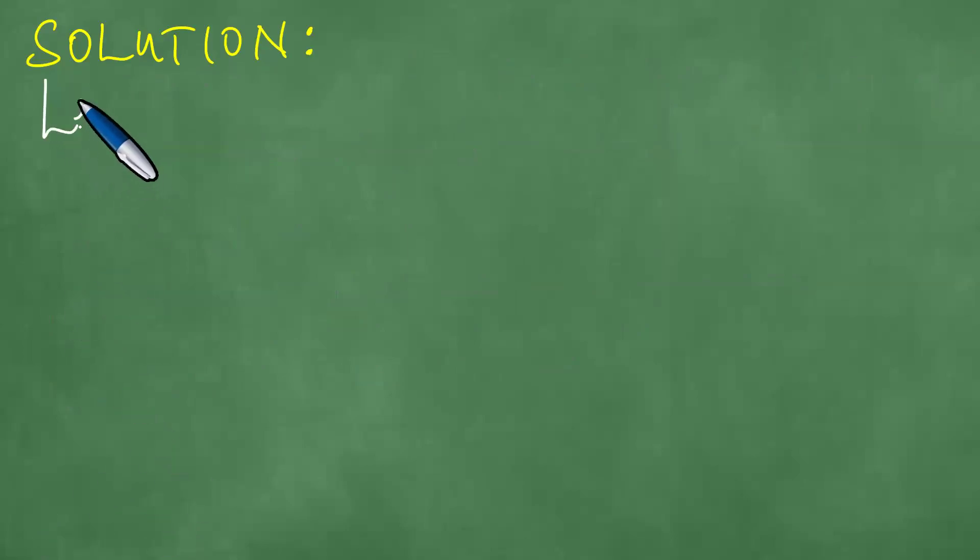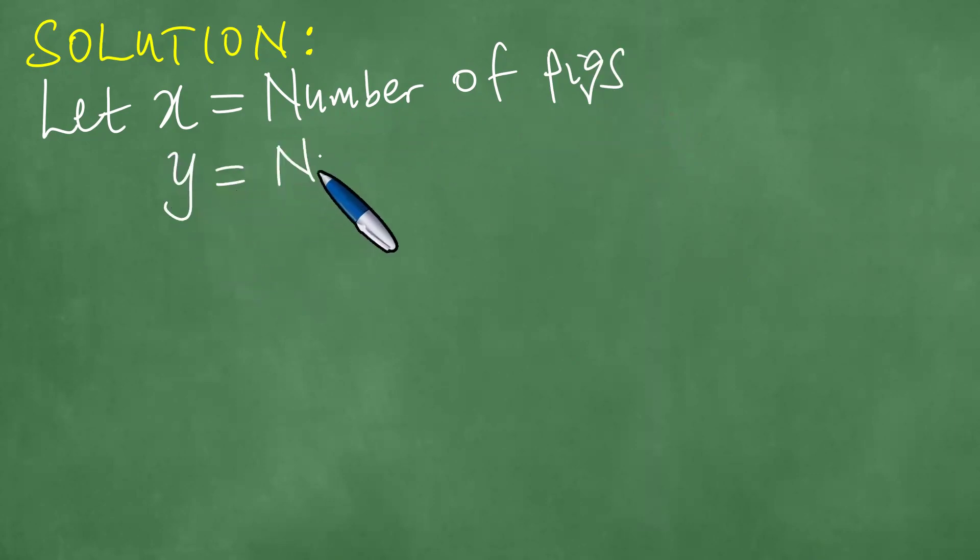We let X be equal to the number of pigs, like so. Y becomes the number of chickens.